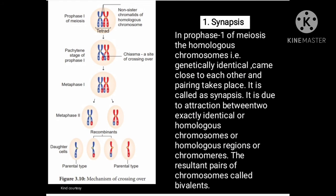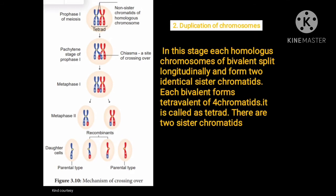First, we will see synapsis. In prophase I of meiosis, the homologous chromosomes — that is, genetically identical chromosomes — come close to each other and pairing takes place; it is called synapsis. As you observe the figure, this first stage is due to the attraction between two exactly identical or homologous chromosomes, homologous regions, or chromomeres. The resultant pairs of chromosomes are called a bivalent.